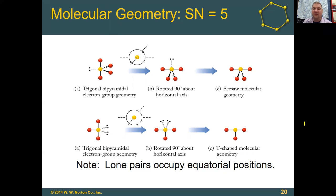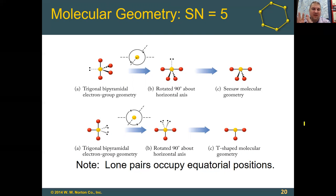That lone pair repels the two axial atoms a little more than normal, so those axial atoms won't be exactly 180 degrees — maybe closer to 178. The equatorial atoms would be close to 120 degrees, maybe just a little less like 119. A second lone pair also goes into an equatorial position to minimize repulsive forces. With those two lone pairs, if we tilt the molecule it looks like a T — that's how it got its name of T-shaped molecular geometry.